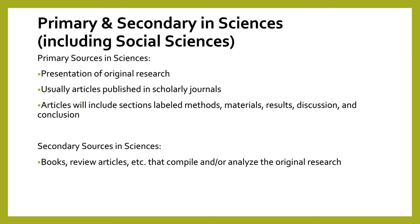So how do these source types work in the sciences? And when I say sciences, I am also including social sciences such as sociology, psychology, communication studies, etc. Primary sources in sciences include the presentation of original research. They are usually in the form of articles published in peer-reviewed, scholarly journals. A good way to identify such a piece is by the sections it includes. Original research studies typically have sections labeled with some variation of the following: methods, materials, results, discussion, and conclusion. Secondary sources in the sciences are similar in characteristics to secondary sources in any other field. They include things like books, review articles, and anything else that compiles and or analyzes the original research.